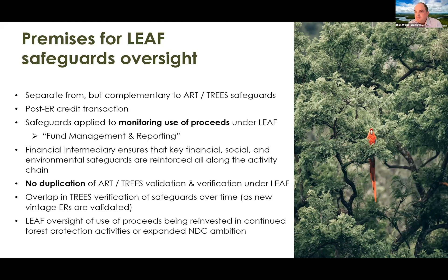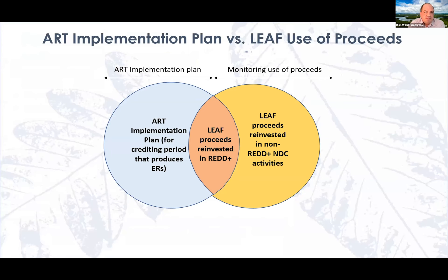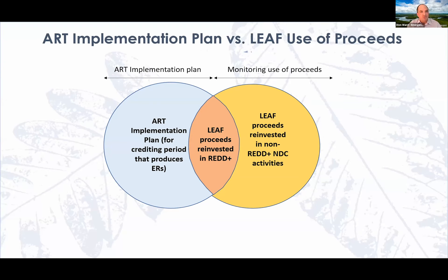This Venn diagram helps lay out both temporally and thematically the contrast between the ART implementation crediting period — where ART TREES safeguards are applied — and the use of proceeds we're monitoring through the financial intermediary. In some instances there will be the same reinforcing of existing REDD+ programs and ongoing policies; in other instances there'll be new initiatives the government chooses to fund that go beyond REDD+ plans, potentially including sustainable development goals in alignment with NDCs. It's important to understand we're looking at the monitoring of use of proceeds — that's what the fund management and reporting work entails.